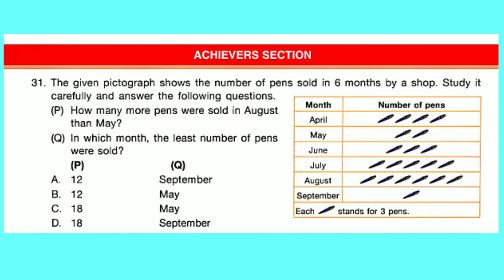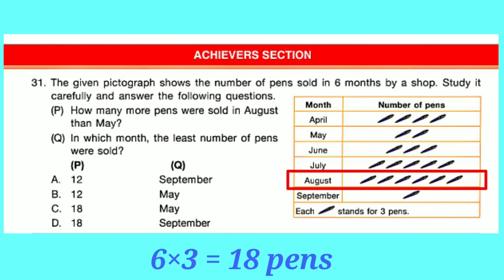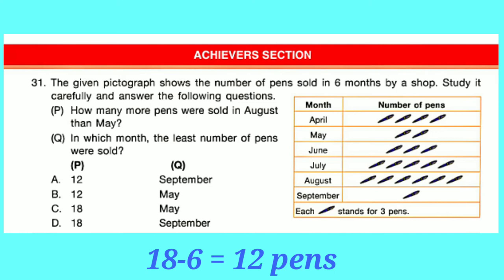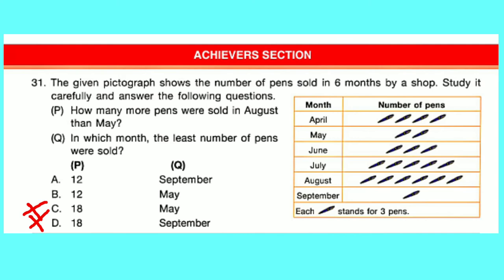Achiever Section. Question number 31: The given pictograph shows the number of pens sold in 6 months. Key: 1 picture stands for 3 pens. P: How many more pens were sold in August than May? Pens in August: 6 into 3 equals 18. Pens in May: 2 into 3 equals 6. Difference: 18 minus 6 equals 12. P is 12, options A and B correct. Q: In which month were the least pens sold? In September there is only 1 picture, representing 3 pens — the least. Correct option is A: September.